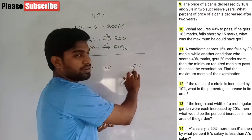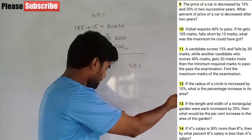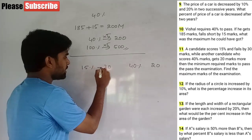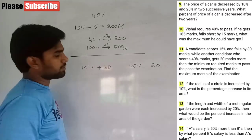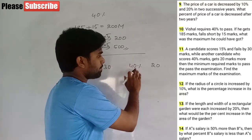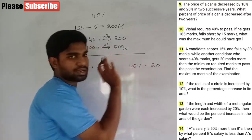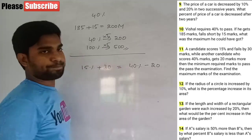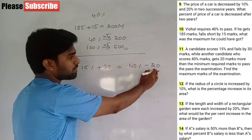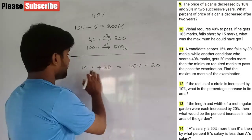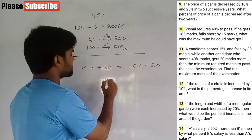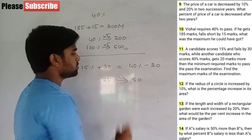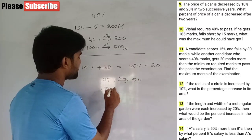Second candidate scores 40% and gets 20 marks more than the passing marks. So the difference between their marks is 30 plus 20 equals 50 marks, corresponding to 25% difference. 25% equals 50 marks, so 50% equals 100 marks and 100% equals 200 maximum marks.